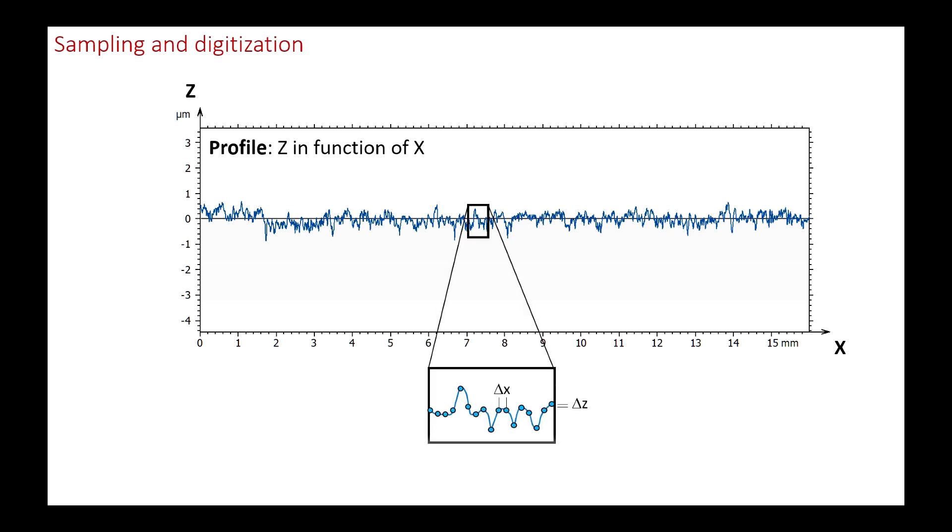The spacing between points, called the sampling step, depends on both the speed of movement and the sampling rate. This has an impact on the lateral wavelengths recorded by the profilometer. This is called bandwidth.